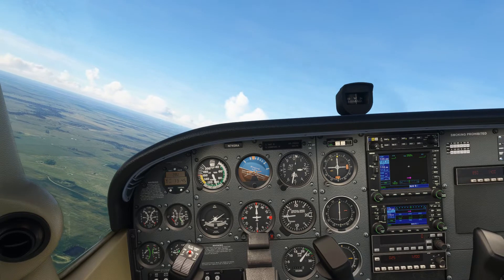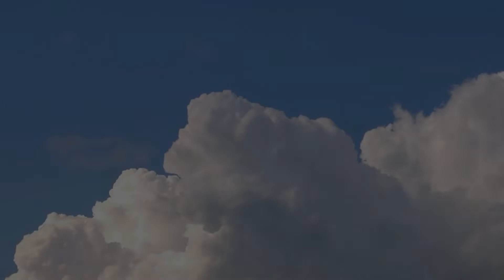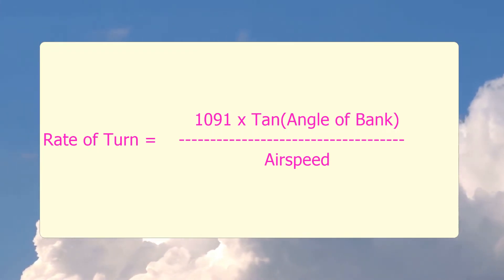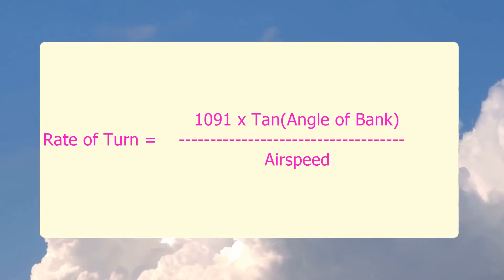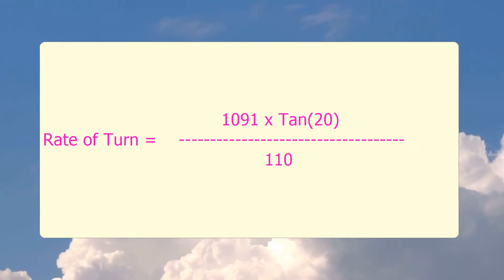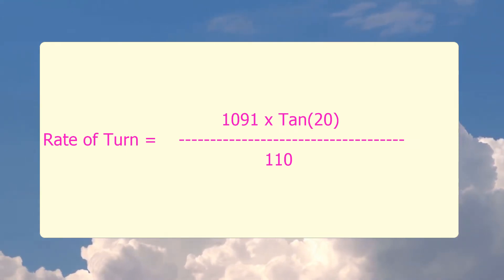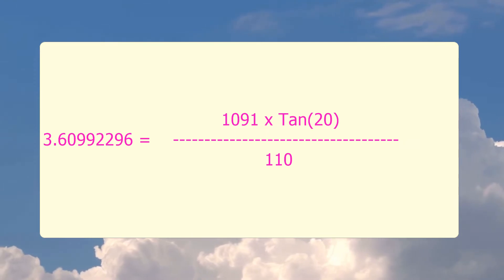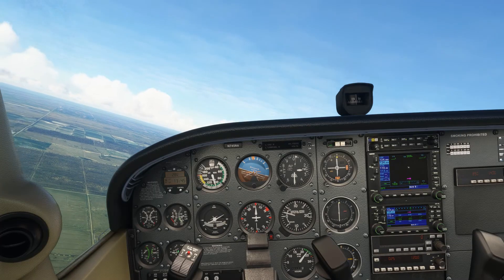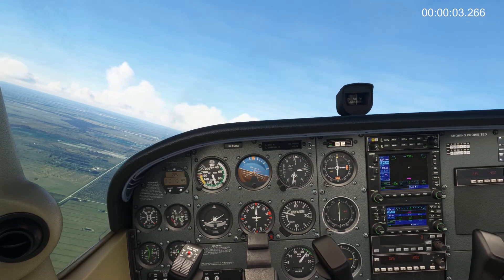A rate one turn, or standard rate turn, is a rate of turn which gives us 3 degrees per second. If you're into mathematics, the rate of turn is equal to 1091 times the tangent of the bank angle divided by the airspeed. If we do this calculation for 20 degrees angle of bank at 110 knots of true airspeed, the rate of turn is approximately 3.6 degrees per second, which checks out with the instrument — this white marker here signifies a turn rate of 3 degrees per second.